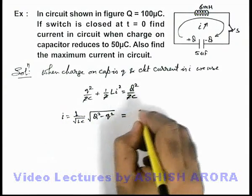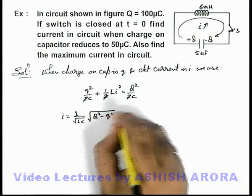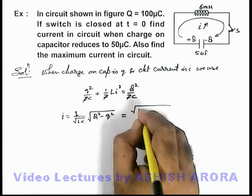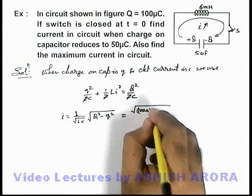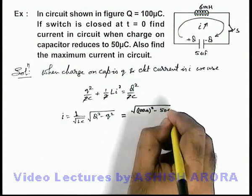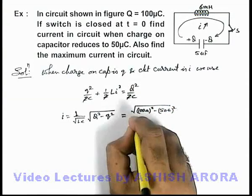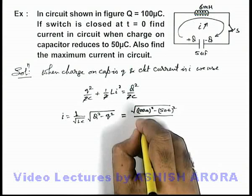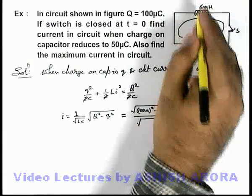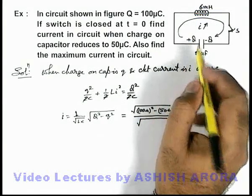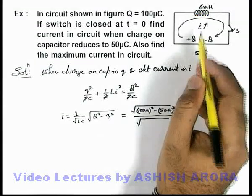Here we substitute the value, see what we are getting. Here charges are 100 microcoulombs and 50 microcoulombs divided by root of LC. We can see you're getting it 6 multiplied by 5, it'll be 30 into 10 to power minus 9.